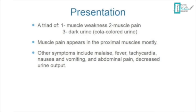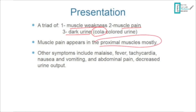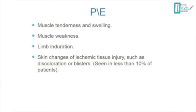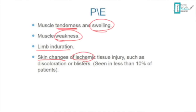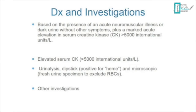The presentation of rhabdomyolysis is a triad: muscle weakness, muscle pain, and dark cola-colored urine. Muscle pain is not always present and, when it is, tends to involve proximal muscles such as the shoulders and hips. General symptoms include malaise, fever, tachycardia, nausea, vomiting, abdominal pain, and decreased urine output. Physical examination findings include muscle tenderness, swelling, weakness, limb induration, skin changes, ischemic tissue changes, and blisters.